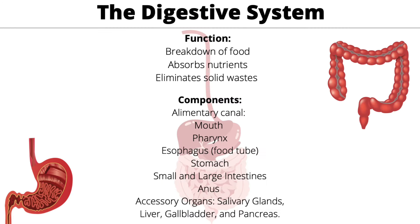The digestive system's main function is to break down food, absorb nutrition, and eliminate solid waste. Components of the alimentary canal are the mouth, pharynx, esophagus, stomach, small and large intestines, and anus, along with accessory organs such as the salivary glands, liver, gallbladder, and pancreas. The small intestine absorbs nutrients, while the large intestine eliminates solid waste.